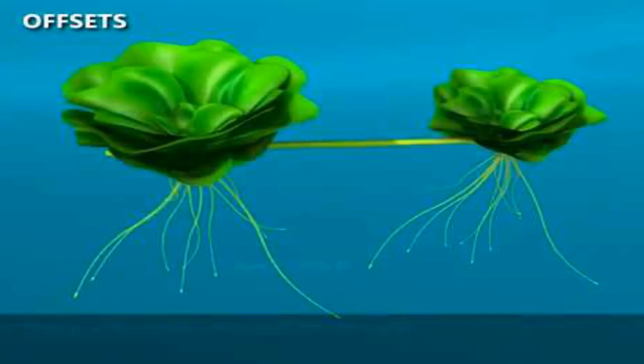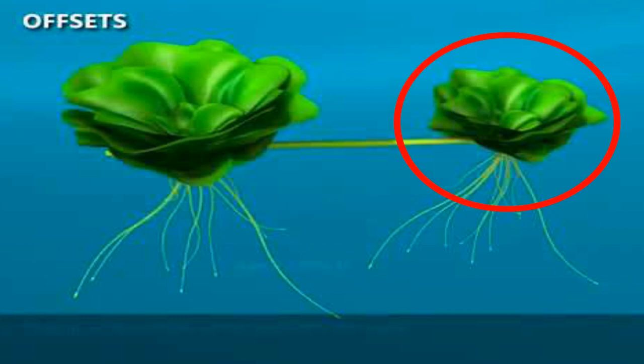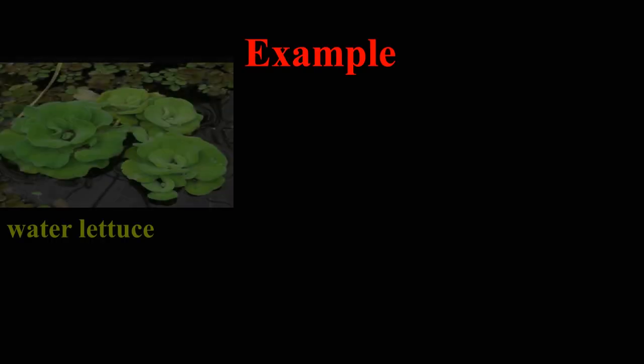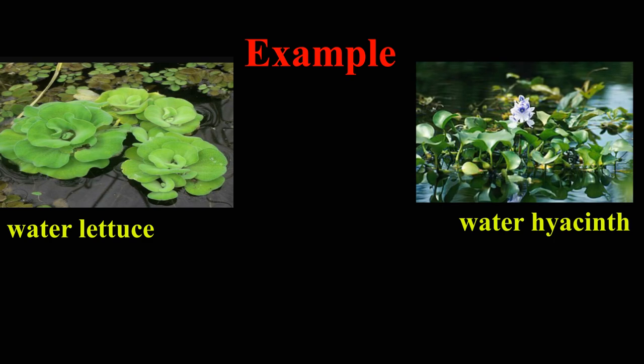Offset: An offset is a short runner with one internode long. It originates from a leaf axil and grows as a short horizontal branch. It produces a cluster of leaves above and adventitious roots below. Offsets are generally found in aquatic plants like water lettuce, water hyacinth, house leek, etc.